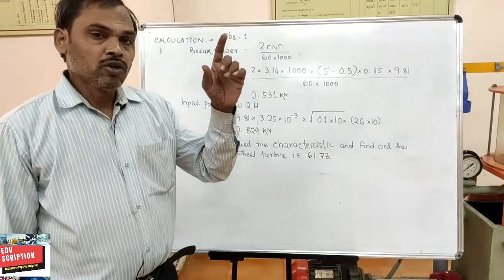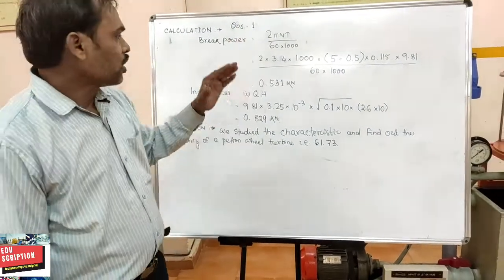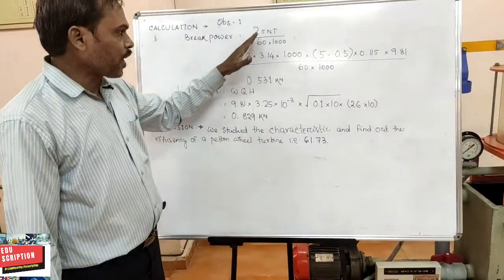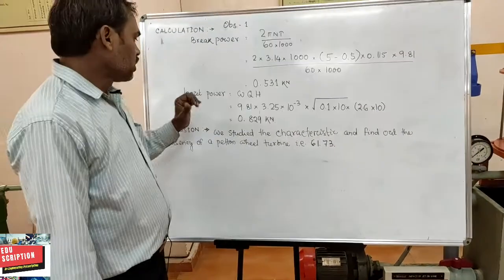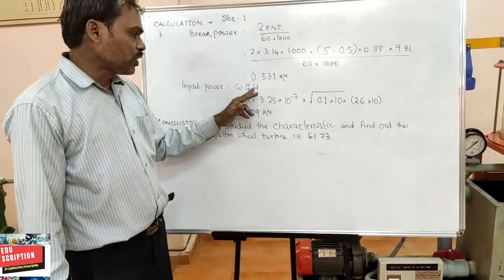The brake power is 2πNT/60,000 and input power is wQH. Then you put the value of observation 1, 2, 3, 4 like this.